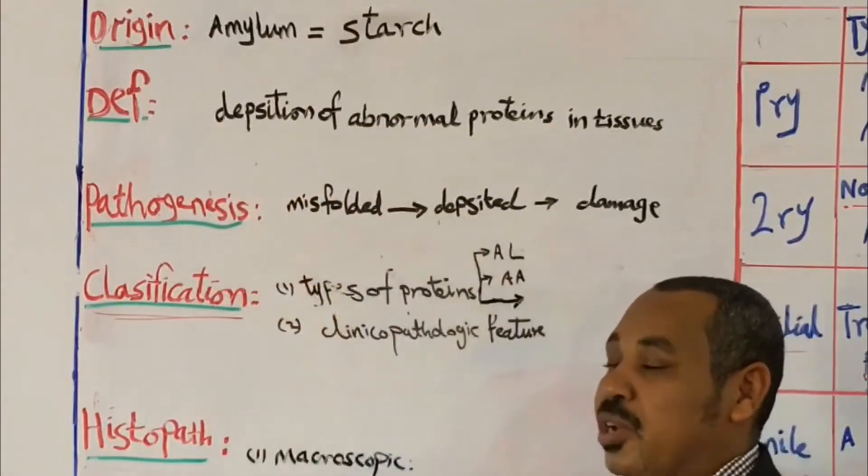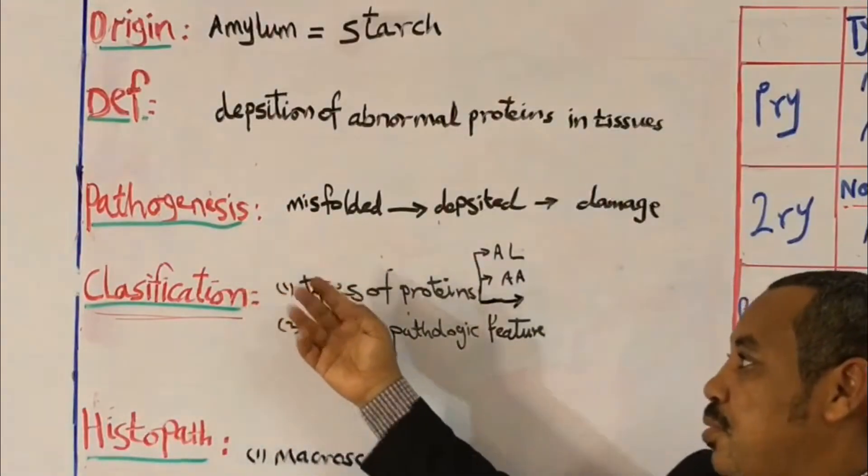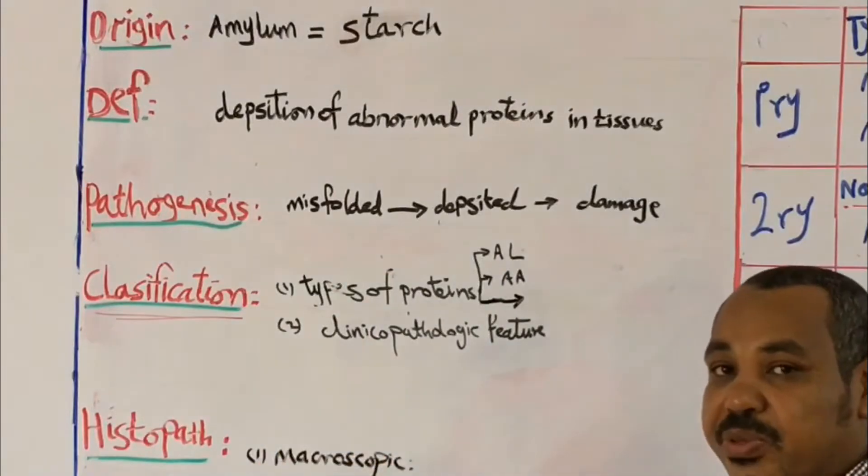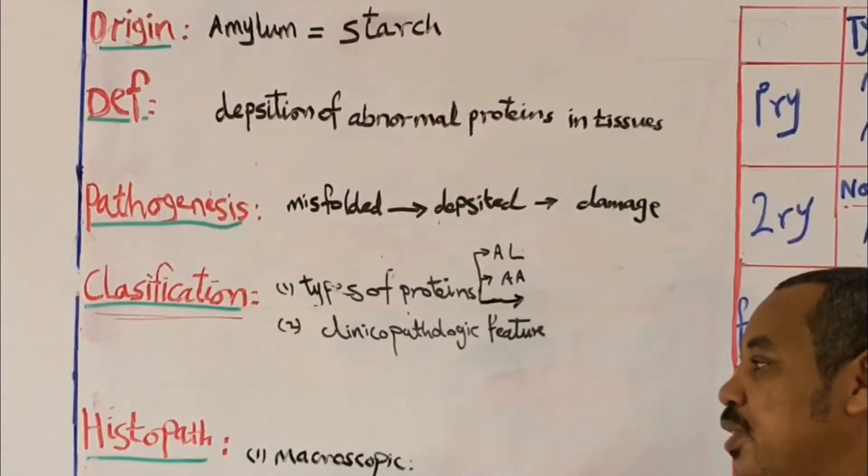Number two, what is the definition of amyloidosis? Number three, pathogenesis of amyloidosis, classification, and histopathological changes which will take place in amyloidosis.